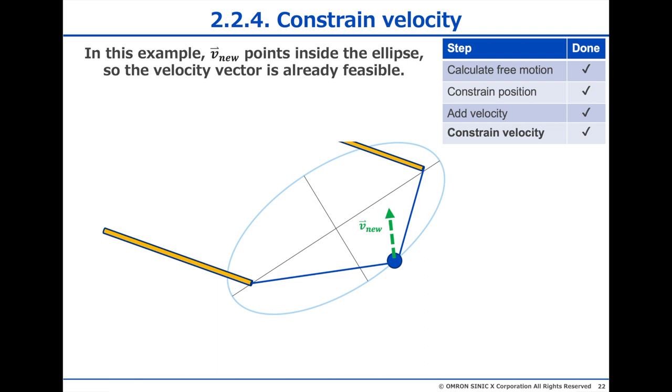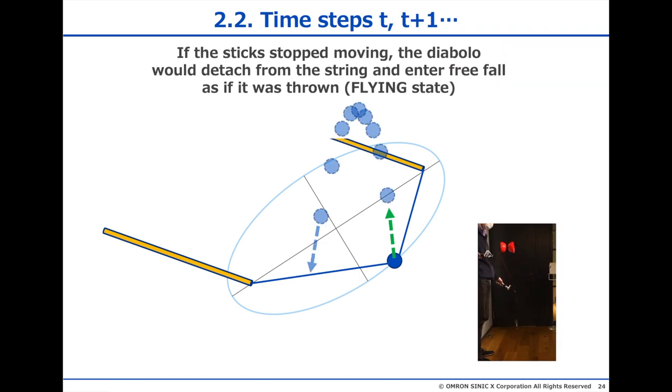Now, if we stop moving the sticks right now, the Diabolo would start flying, and it would look like this. And if you look at this, you can see a potential problem, because when we throw the Diabolo at the top, we shouldn't constrain its motion, because it might hit the top of the ellipsoid. So to solve this, we model the Diabolo with three states.